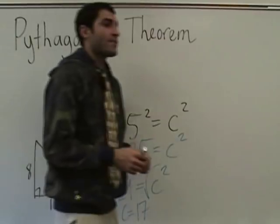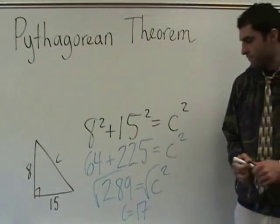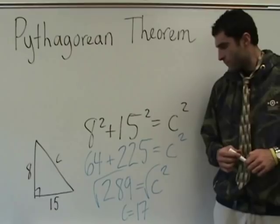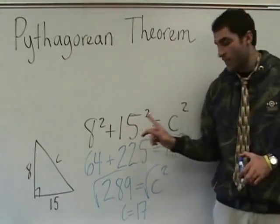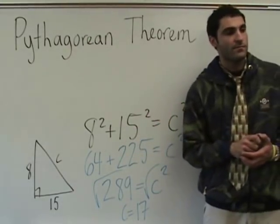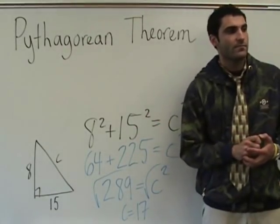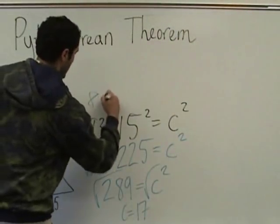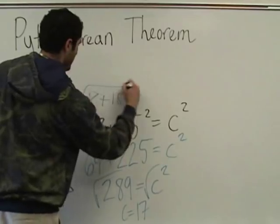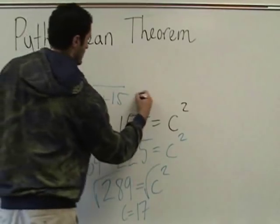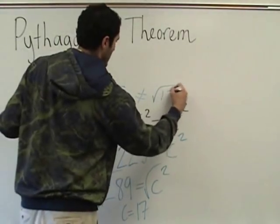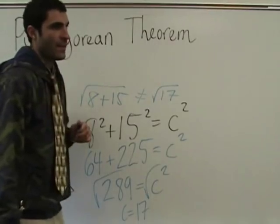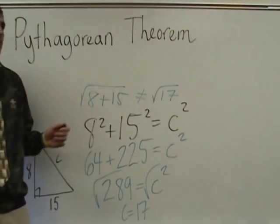Question: wouldn't it be the same as 8 plus 15 equals C? Does 8 plus 15 equal 17? Because if you square root them all right there, then it would count. It won't work. 8 plus 15 square root does not equal 17. You have to square them each individually first.